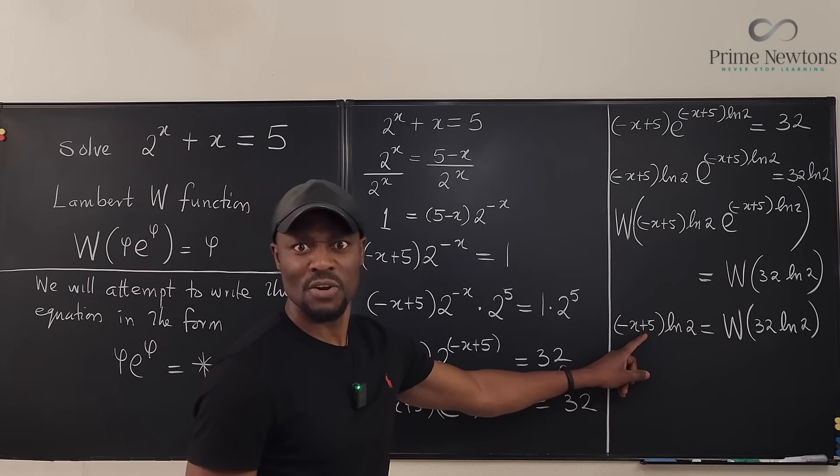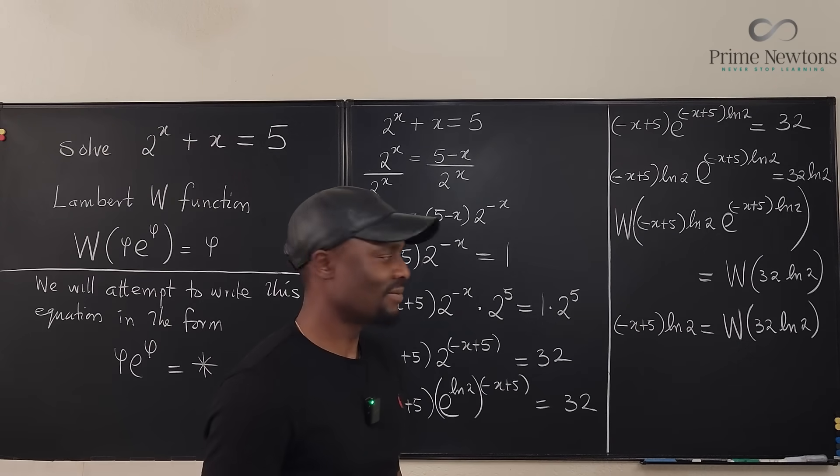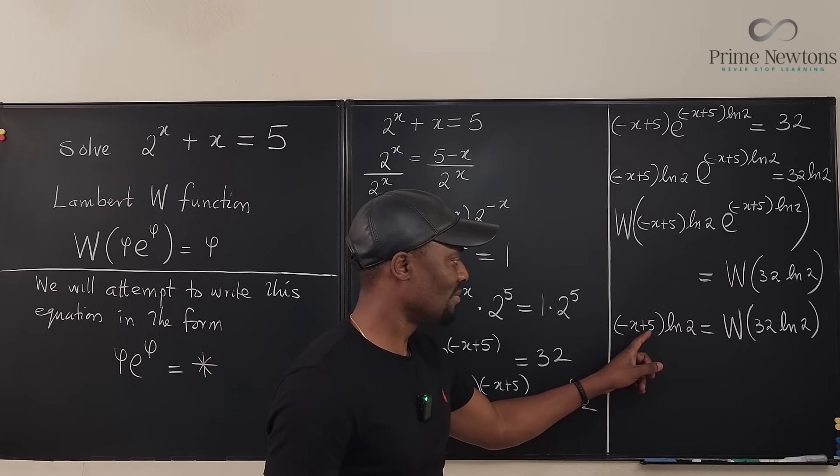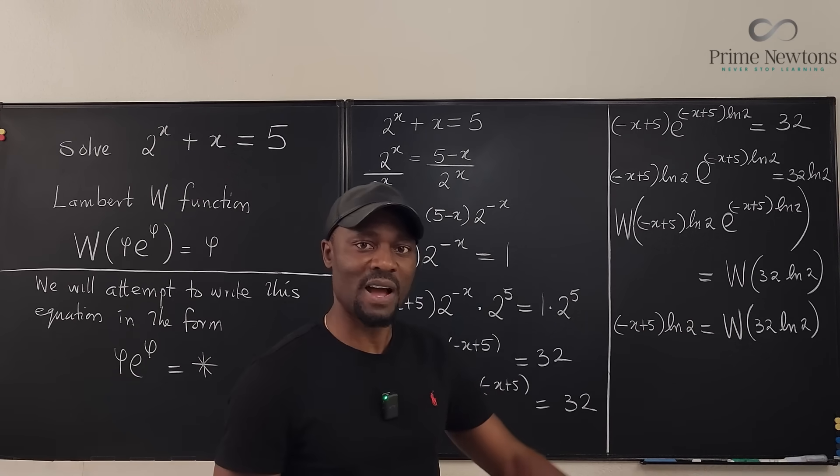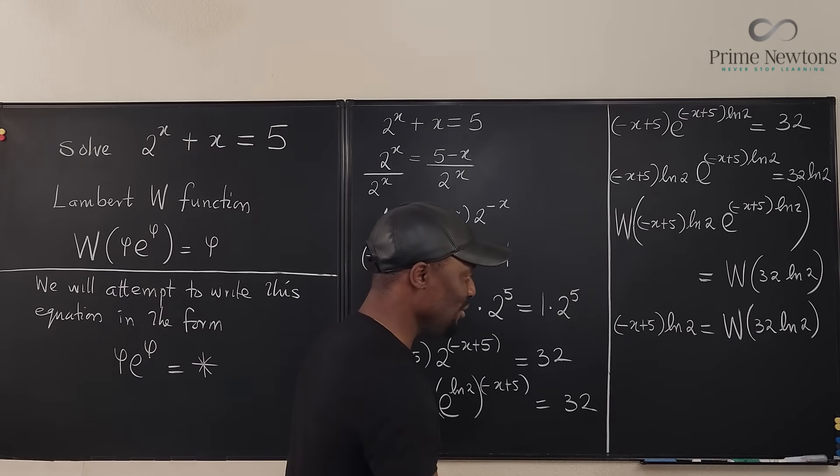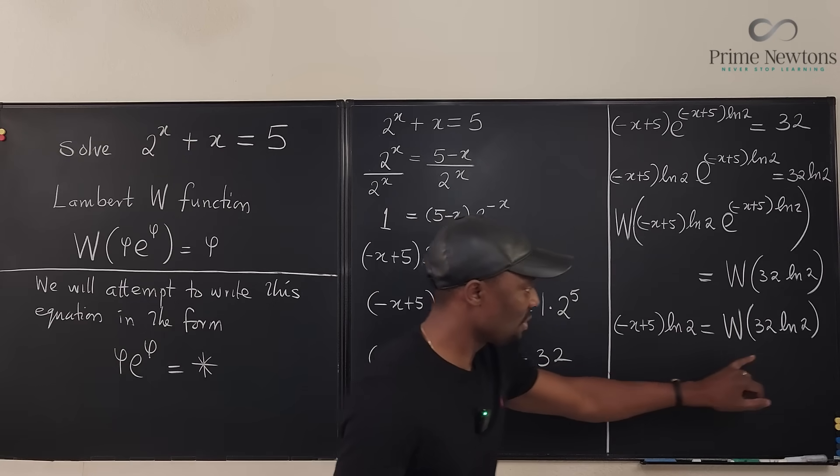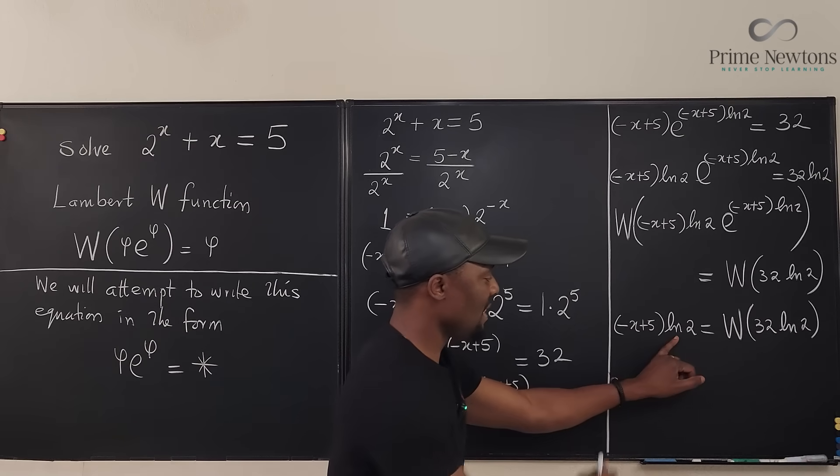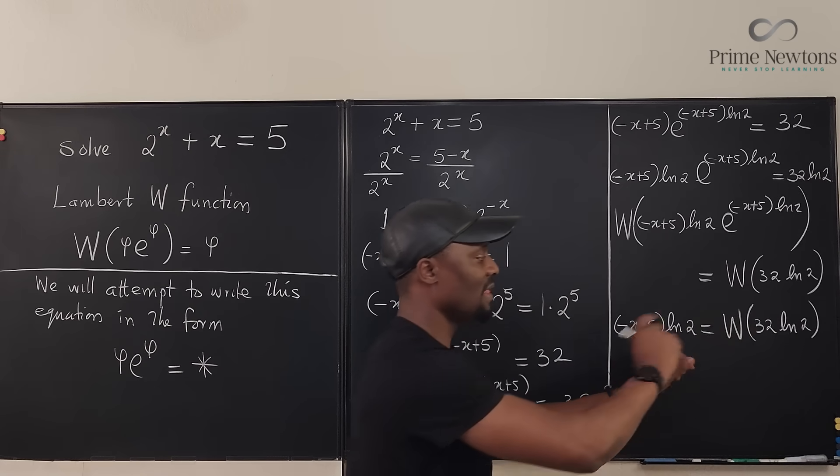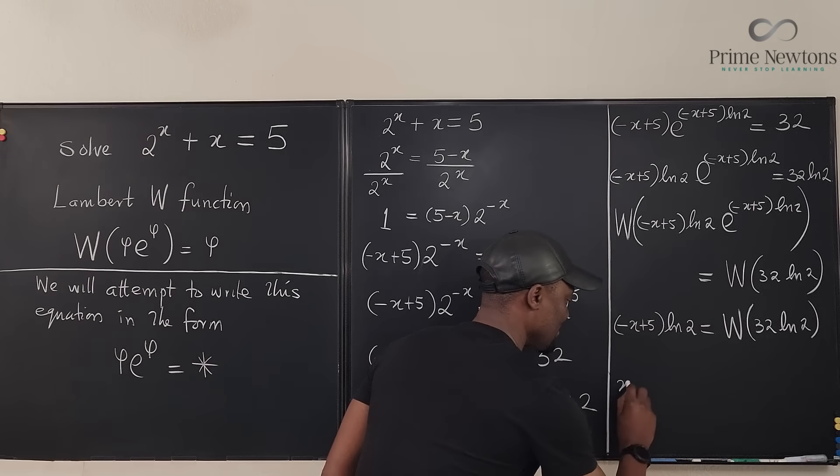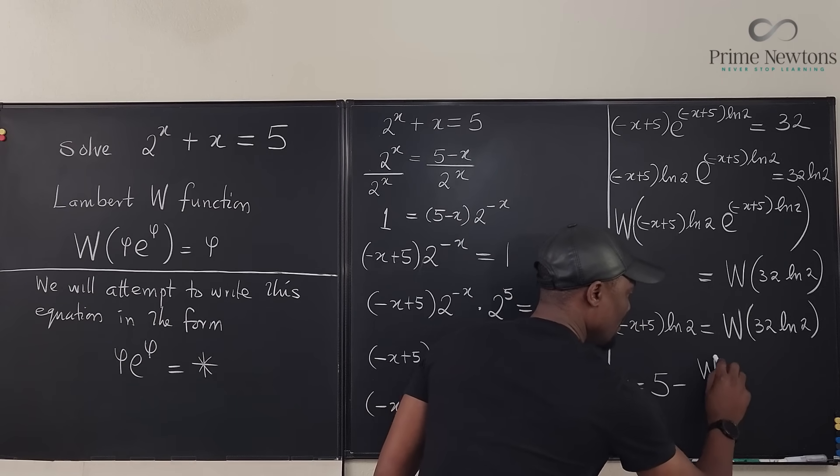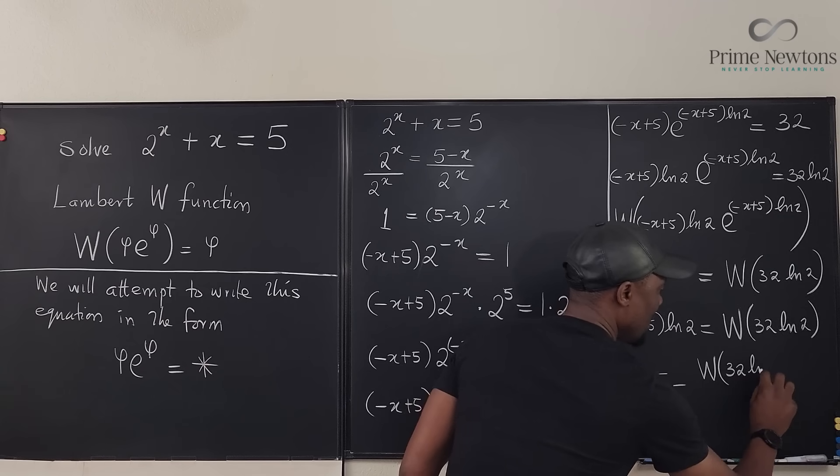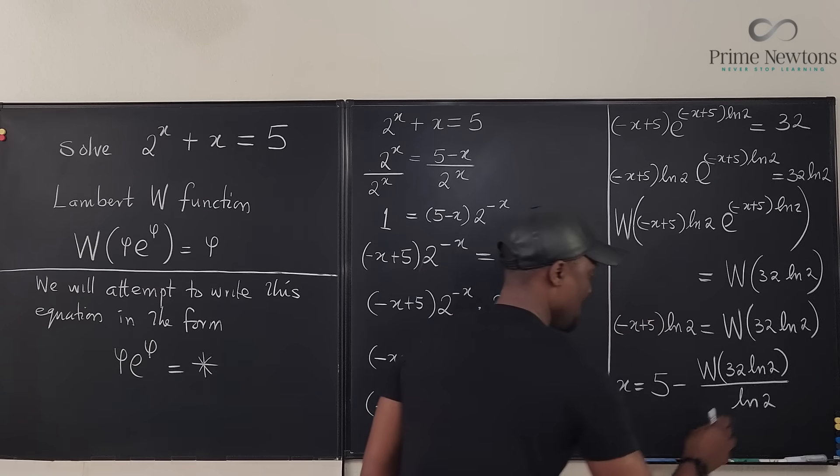So how do you get x? We know how to solve for x. Divide both sides by ln 2, and then we're going to put a minus sign, and then we're going to subtract 5. I'm just going to write the final answer here because if we divide both sides by ln 2, it's going to get rid of this. And then this is -x. You move the 5 there. And then when you switch it, your answer is going to be x = 5 - W(32 ln 2) / ln 2.